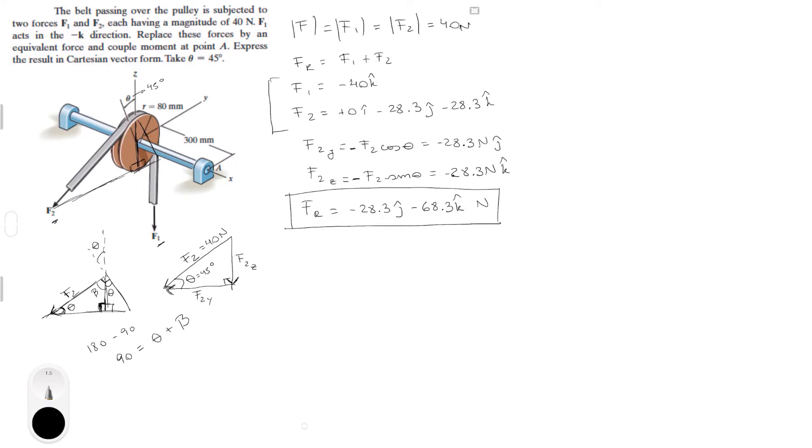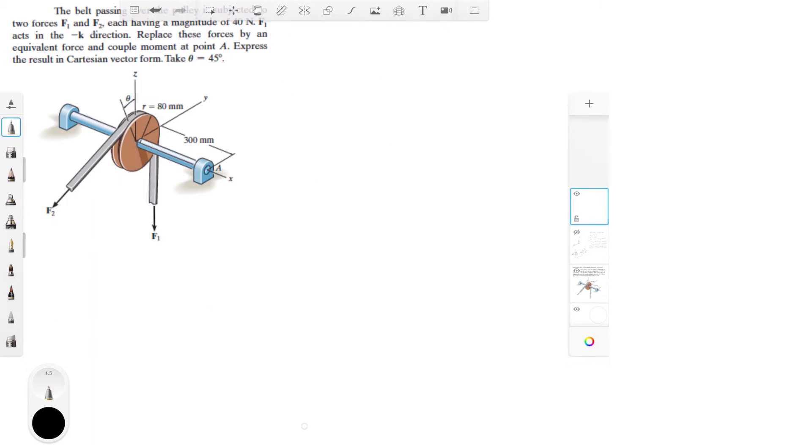When you add them up, you get negative 28.3J minus 68.3K in newtons. I hope you understand the basic trigonometry that we did here. Now let me turn the page because you know how messy I get with matrices.